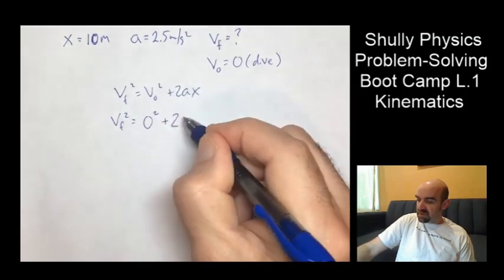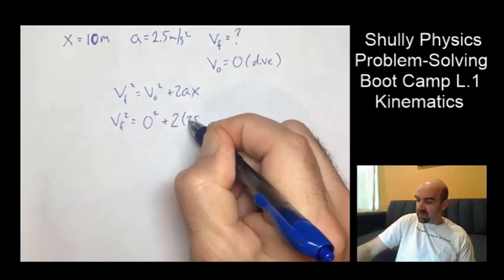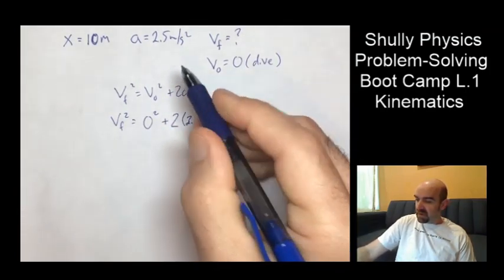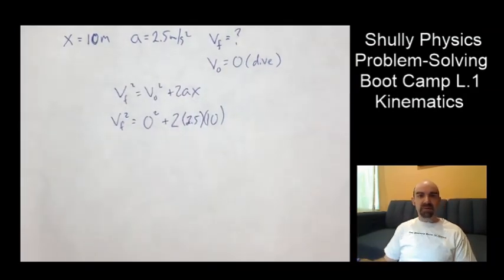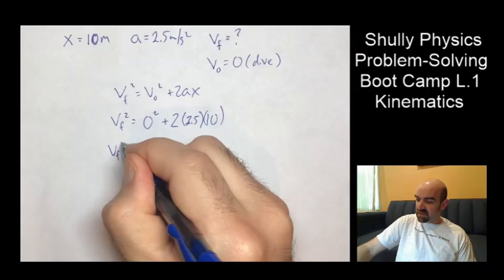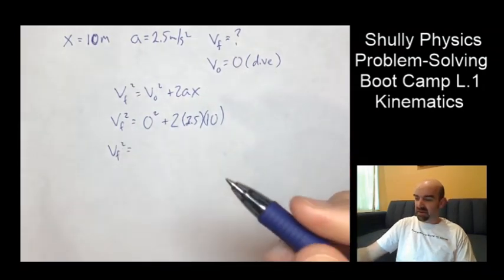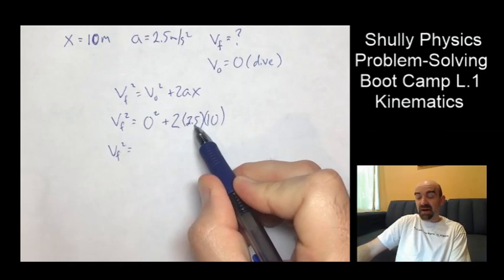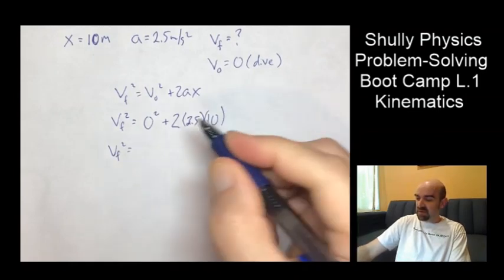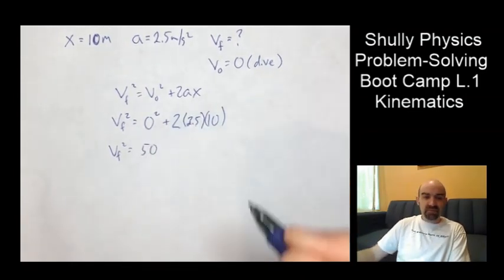Now our acceleration rate is 2.5. And the X is 10. Okay. So we get a final velocity squared. Don't forget that square there. Equals two times 2.5, which is five. Five times 10 is 50.